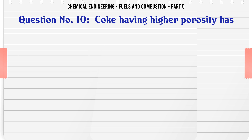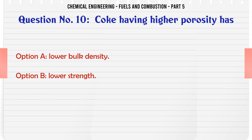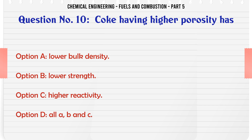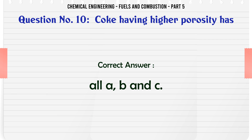Coke having higher porosity has: A. Lower bulk density. B. Lower strength. C. Higher reactivity. D. All A, B and C. The correct answer is all A, B and C.